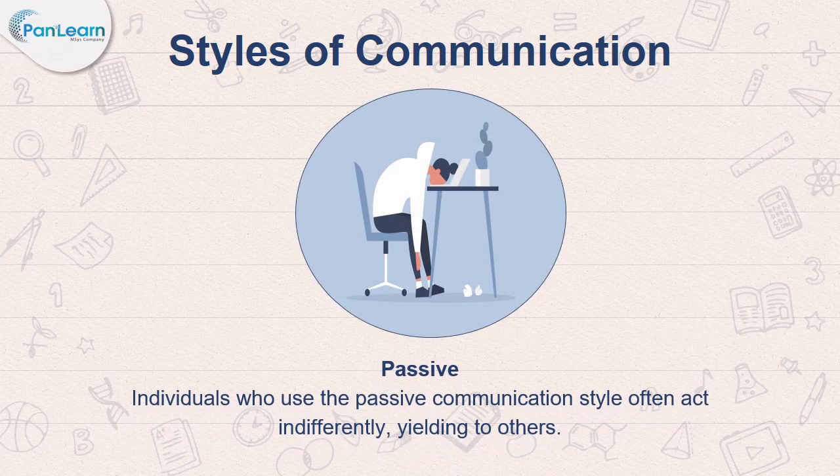Passive: Individuals who use the passive communication style often act indifferently, yielding to others. Passive communicators usually fail to express their feelings or needs, allowing others to express themselves. They often display a lack of eye contact, poor body posture, and an inability to say no. They act in a way that says, 'people never consider my feelings.' However, passive communicators are easy to get along with as they follow others and go with the flow. Example phrases include: 'It really doesn't matter that much' and 'I just want to keep the peace.'